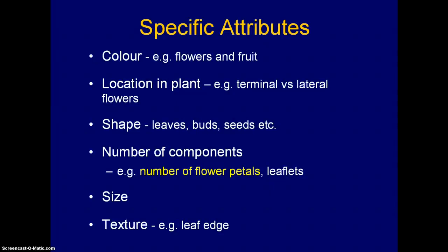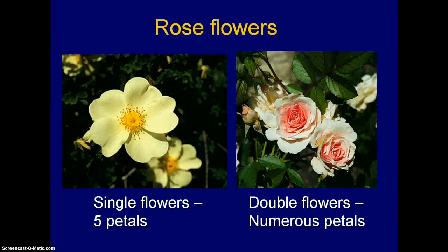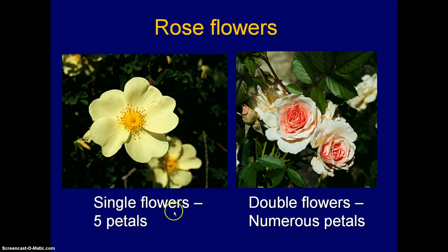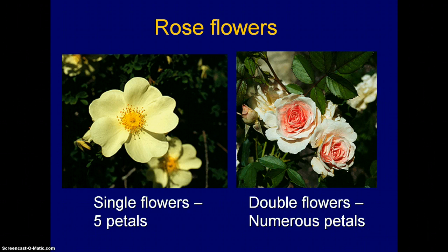The numbers of components of certain attributes are also important, such as the number of flower petals or the number of leaflets in a compound leaf. For example, all plants in the rose family normally have five petals — these are called single flowers. If breeding modifications result in many more petals than the regular five, as is common in most ornamental roses, these are called double flowers.